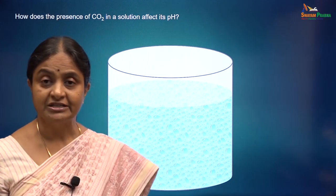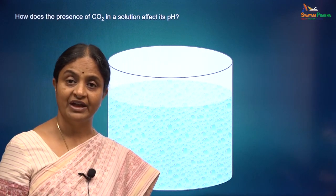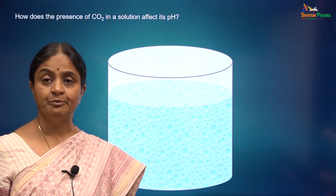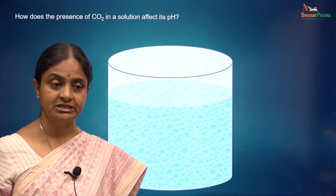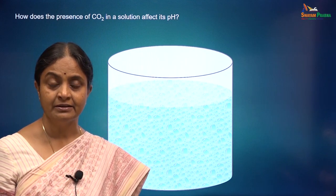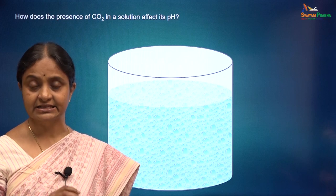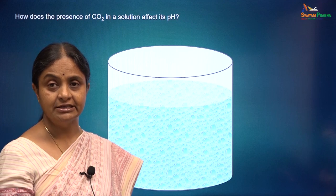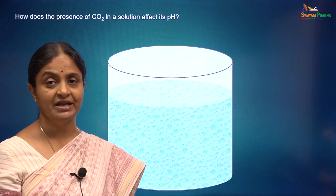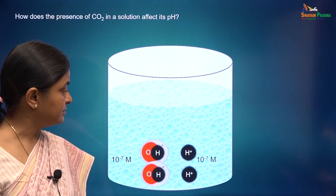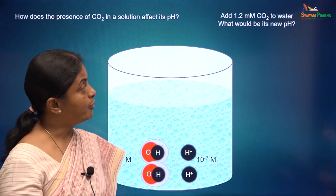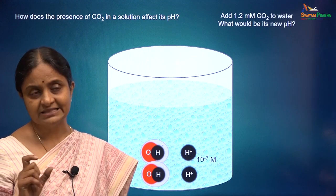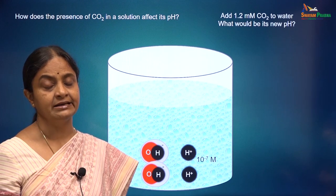We will now see how the presence of carbon dioxide in water will affect its pH. In the last session, we saw that metabolic processes in cells constantly add a net excess of acids into blood, and the predominant acid is carbon dioxide. Therefore, we will consider how presence of carbon dioxide in solution can change the pH of that solution. Let's take 1.2 millimolar carbon dioxide — that is the concentration of carbon dioxide in arterial blood.